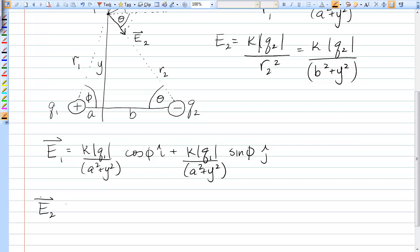And similarly, the electric field due to Q2 is the magnitude of that field times cosine of theta, and then minus, because the Y component points down, magnitude of E2 times the sine of theta, J hat.